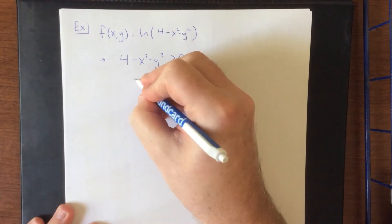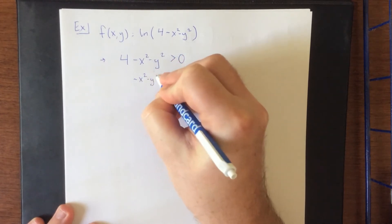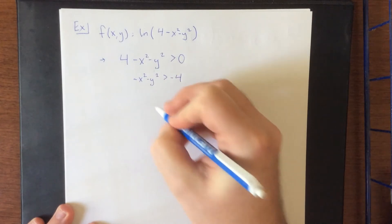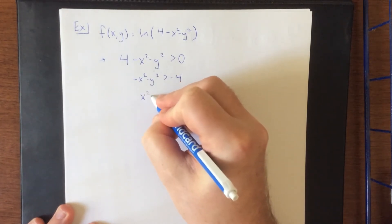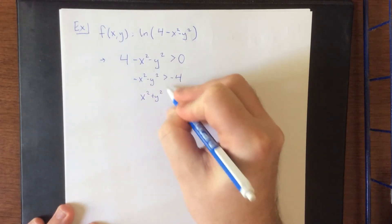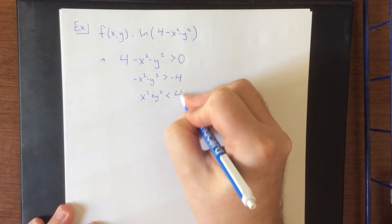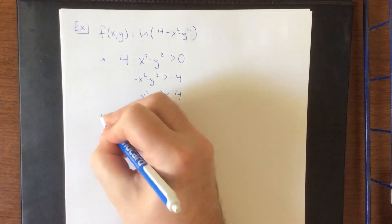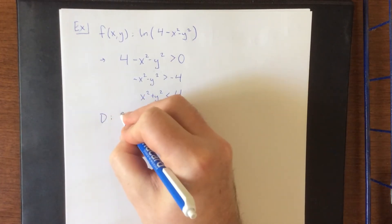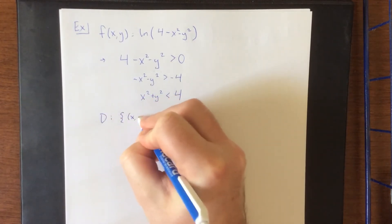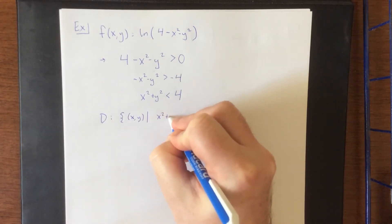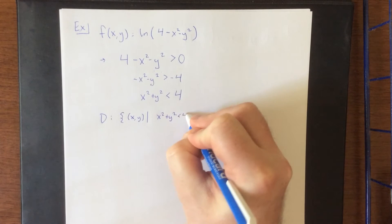Next, if we subtract 4 from both sides, this would be negative x² minus y² is greater than negative 4. And then multiplying both sides by negative 1 would give us x² plus y², reverse the sign, is less than 4. Now with that in mind, if we wanted to express the domain of this function, we could say that this is the set of all ordered pairs (x,y) such that x² + y² is less than 4.